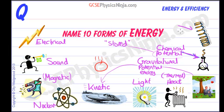And finally, we've got elastic — elastic potential energy. When you stretch a spring or compress a spring, you are storing energy in it. And if you release it, the spring will bounce off and convert that elastic potential energy into kinetic energy.